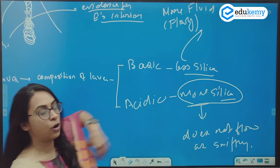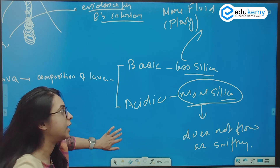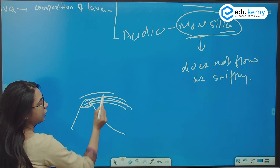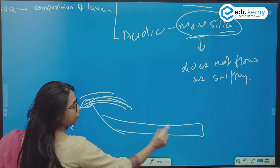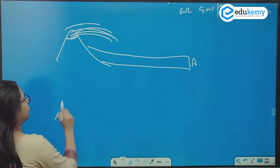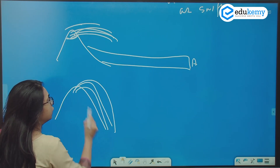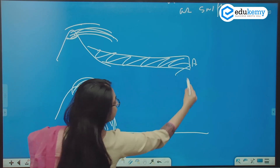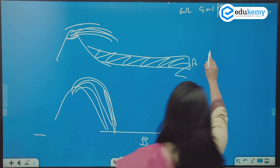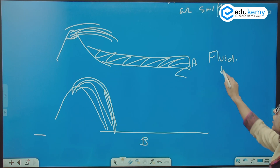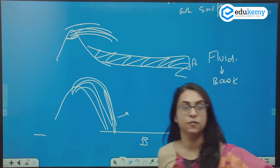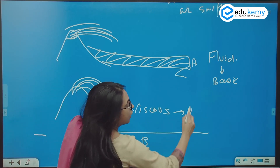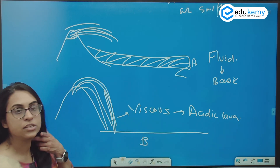Now I am drawing two figures. Please tell me from this information — whatever we have studied — which will be a basic lava and which will be the acidic lava. So, this is a volcano. From here we have the lava coming in. If this lava flows and reaches up to A, and there is another volcano where the lava can flow up to only point B — which out of A and B is more fluid in nature? This one, A, is more fluid in nature. So this will be basic lava. This one, B, is more viscous in nature — something which is dense. Because it is more viscous, it is called as acidic lava.